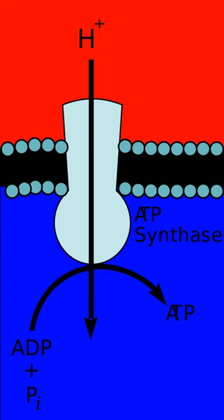Electron transport chains are redox reactions that transfer electrons from an electron donor to an electron acceptor. The transfer of electrons is coupled to the translocation of protons across a membrane, producing a proton gradient. The proton gradient is used to produce useful work. About 30 work units are produced per electron transport.